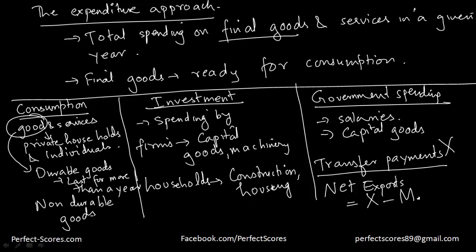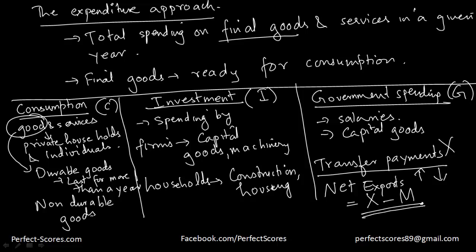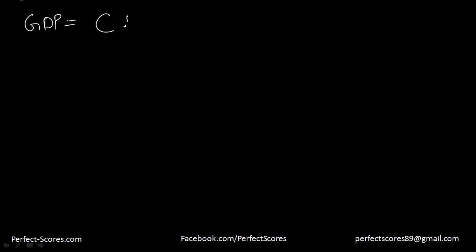The next part is net exports, which is equal to exports minus imports. If net exports are positive — exports greater than imports — then GDP is rising. If net exports are negative, GDP is reducing. So consumption is C, investment is I, government spending is G, and net exports is X minus M. Based on the expenditure approach: GDP = C + I + G + (X − M).